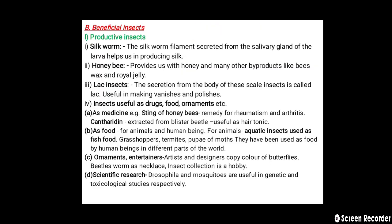The second major category is beneficial insects, in which productive insects include the silkworm. The filament secreted from the salivary gland of the larvae helps us in producing silk. The second productive insect is the honeybee, which provides honey and many other byproducts like beeswax and royal jelly. The third productive insect is the lac insect — the secretion from the body of the scale insect is called lac and is useful in making finishes and polishes.